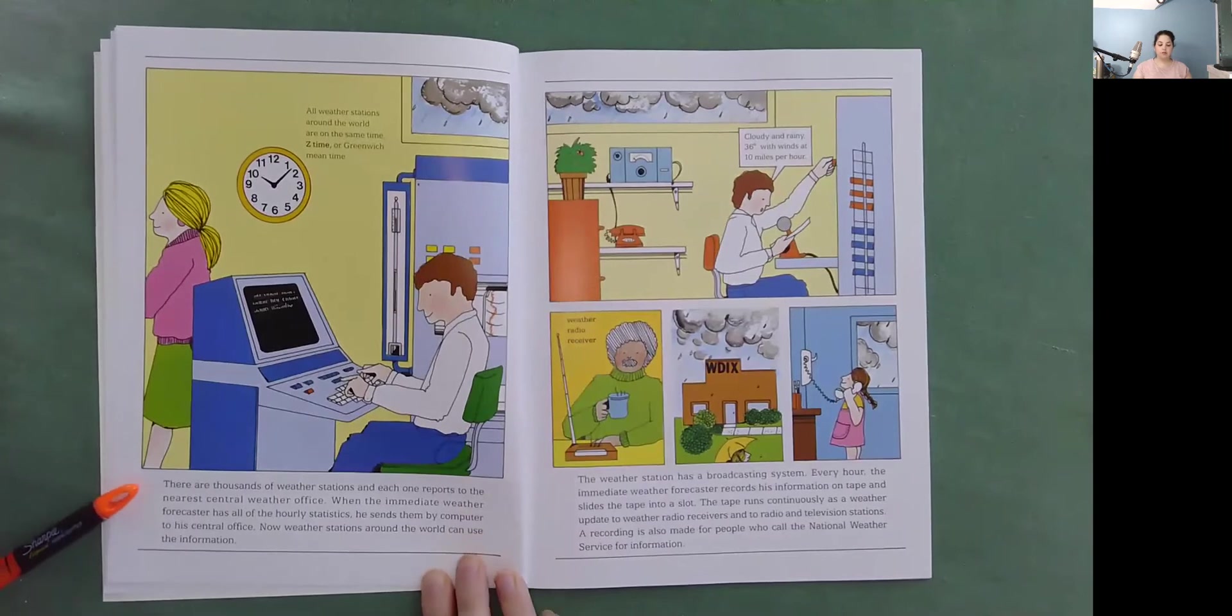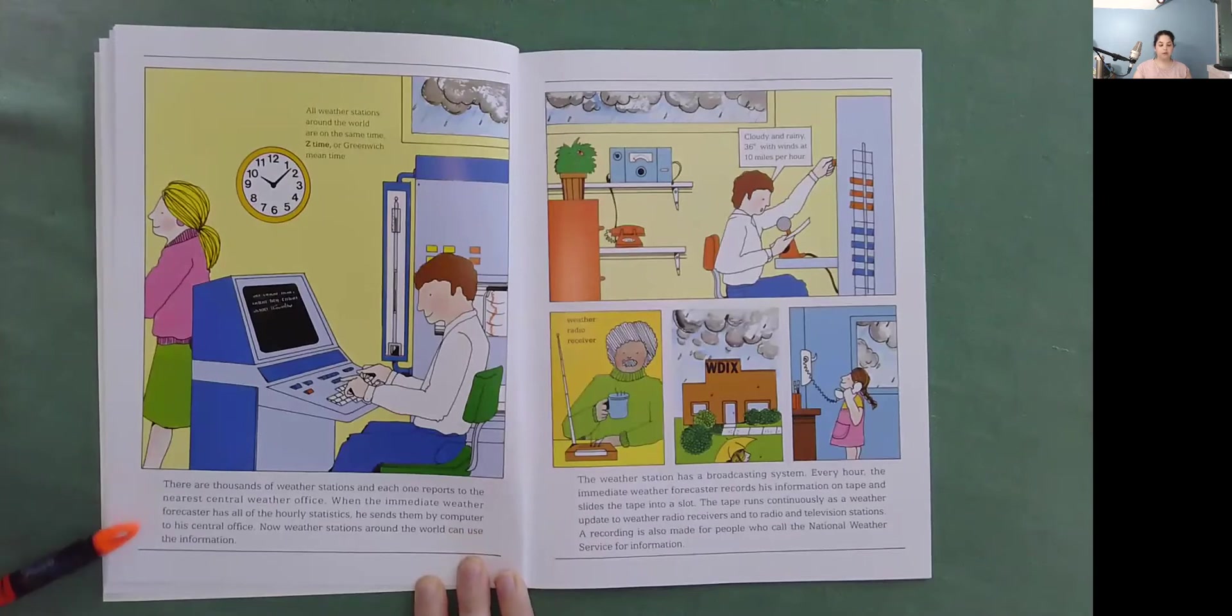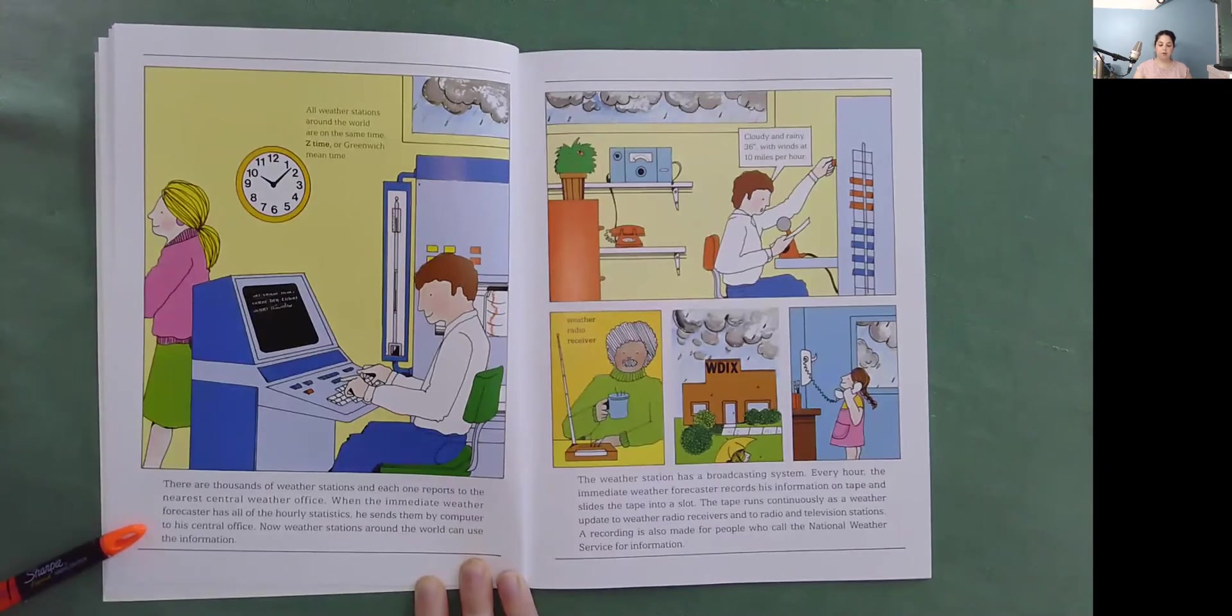There are thousands of weather stations and each one reports to the nearest central weather office. When the immediate weather forecaster has all of the hourly statistics, he sends them by computer to his central office. Now weather stations around the world can use the information.